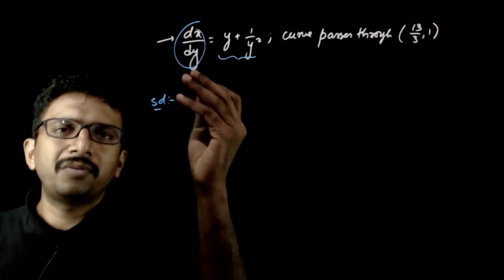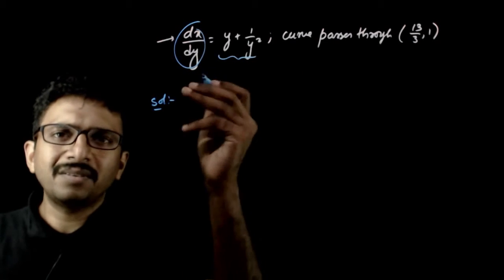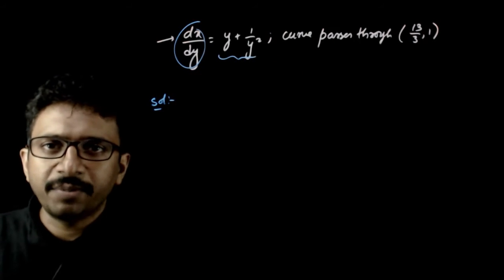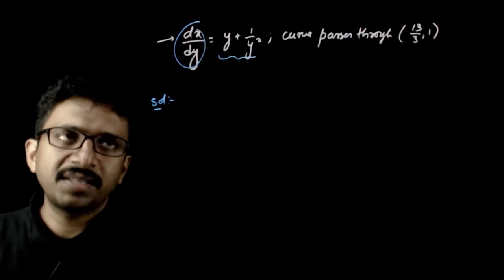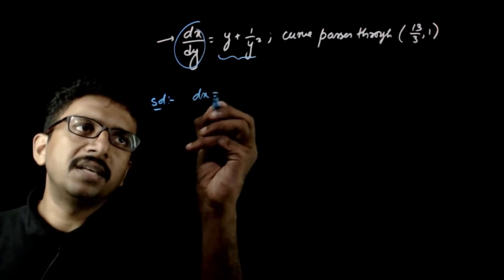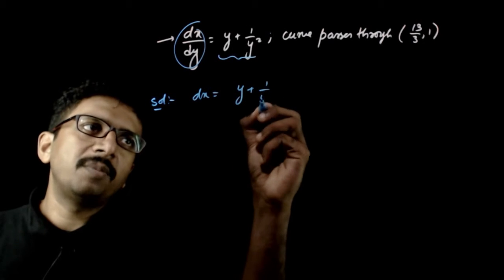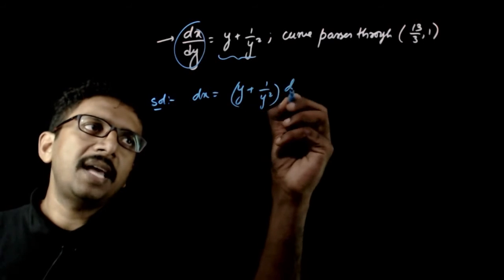This is a very straightforward differential equation which is under the type variable separable. If you send dy onto this side, the variables are separated. So dx is equal to y plus 1 by y square times dy.